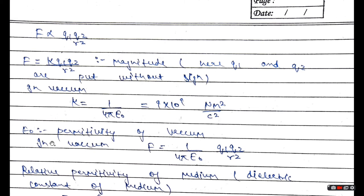To define it, we need to see two things: epsilon naught and relative permittivity. K is equal to 1 by 4 pi epsilon naught, which is 9 times 10 to the power of 9 Newton meter square upon coulomb square. If we see this force in vacuum, then we can define it as 1 by 4 pi epsilon naught into Q1 Q2 upon R square.